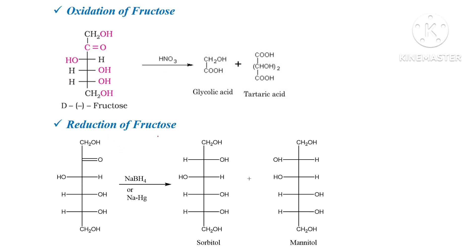Reduction of fructose gives sorbitol and mannitol. Sorbitol was also obtained from the reduction of glucose, and mannitol from the reduction of mannose. When fructose is reduced, the carbonyl group at C2 is reduced to an OH group. There are two possibilities: the OH can go to the left-hand side or the right-hand side, giving sorbitol and mannitol respectively as products.